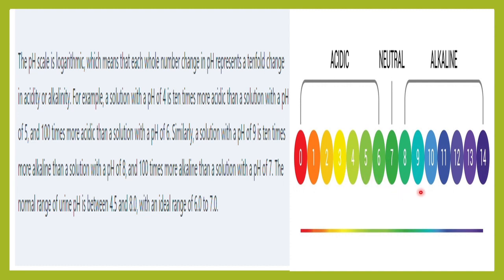Similarly, if a patient's urine pH is 10, it is 10 times more alkaline than pH 9, and 100 times more alkaline than pH 8. So it is a 10-fold change because it is a logarithmic scale.